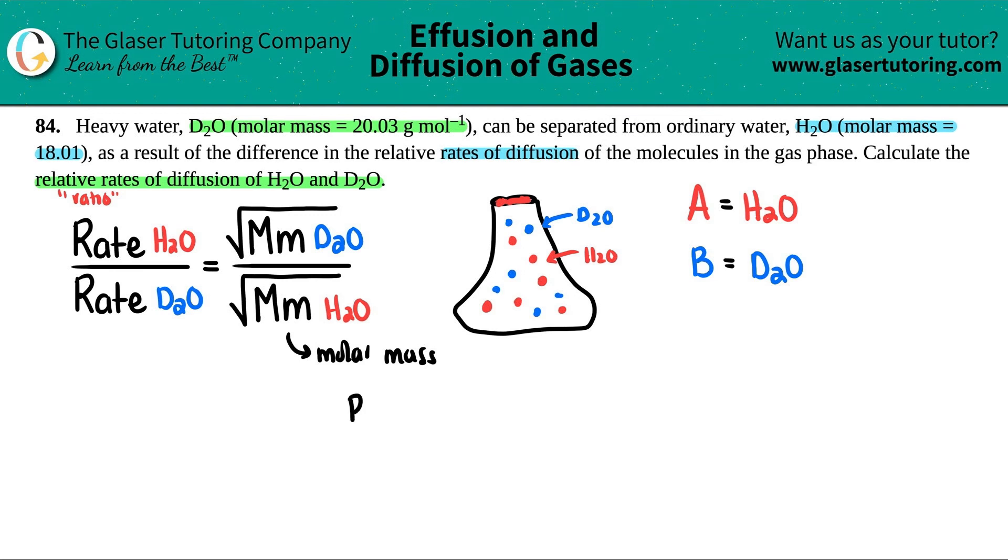Maybe I'll just say that we have R of H2O, R for rate, divided by R of D2O. And this is now going to equal the square root of the molar masses. And they did tell us that the D2O molar mass was 20.03. So that one goes on the top, 20.03.